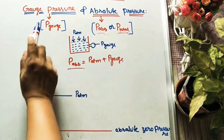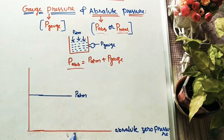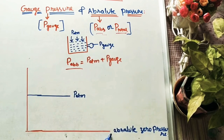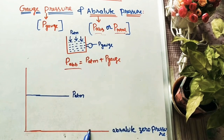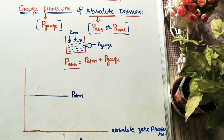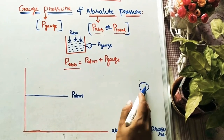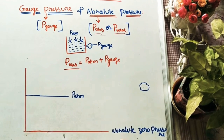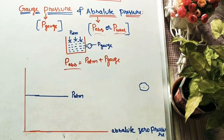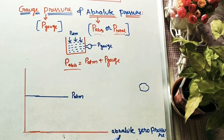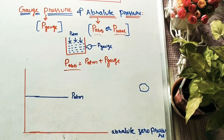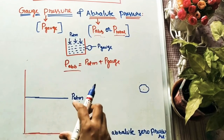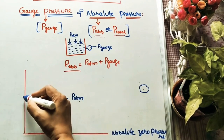We can mark gauge pressure and absolute pressure on a graph. We draw a reference line called the absolute zero pressure line — this is the zero pressure baseline. Below this line, no substance exists; every substance has a pressure above this absolute zero. Above the zero line, we mark atmospheric pressure at 760 mm Hg, which has a fixed value.